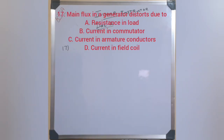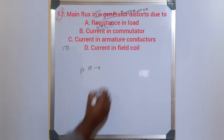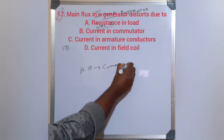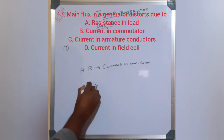The main flux in the generator is distorted due to which factor? The options are: resistance in load, current in commutator, current in armature conductors, and current in field coil. The distortion of the main flux is caused by armature reaction — that is, the current flowing in the armature conductors.